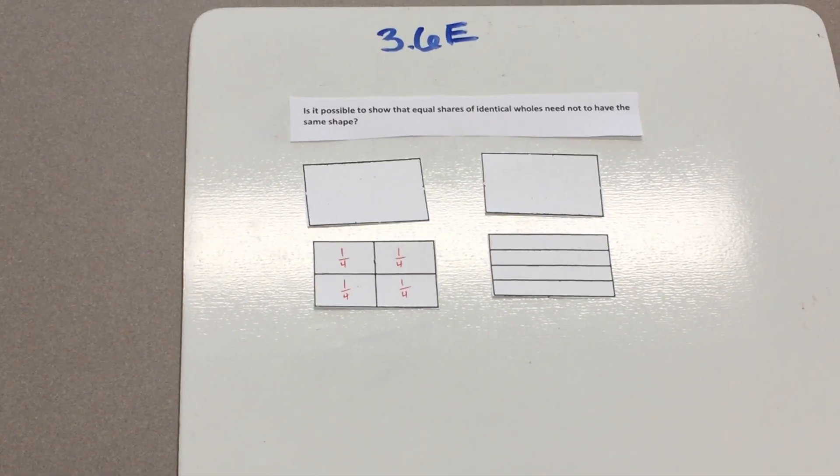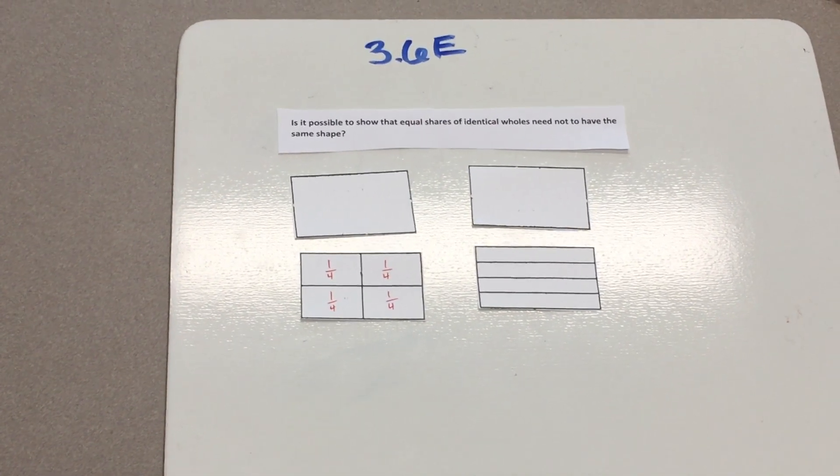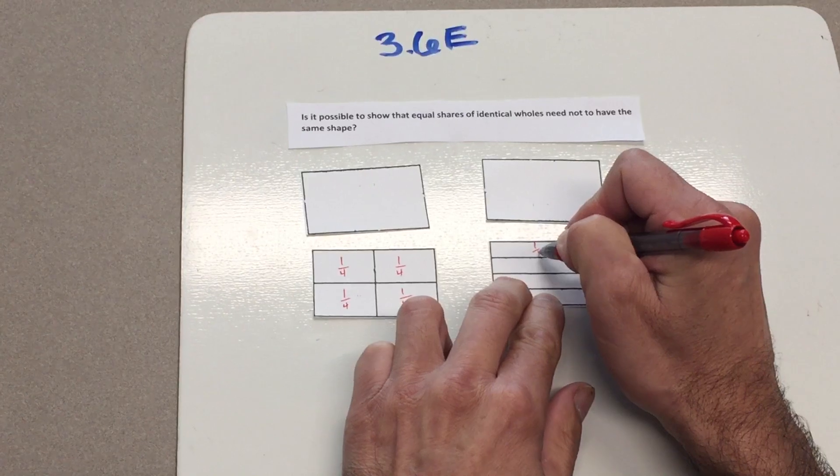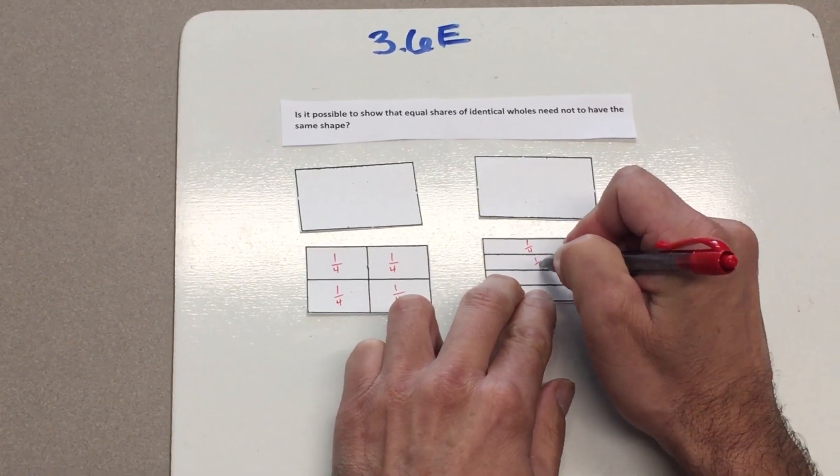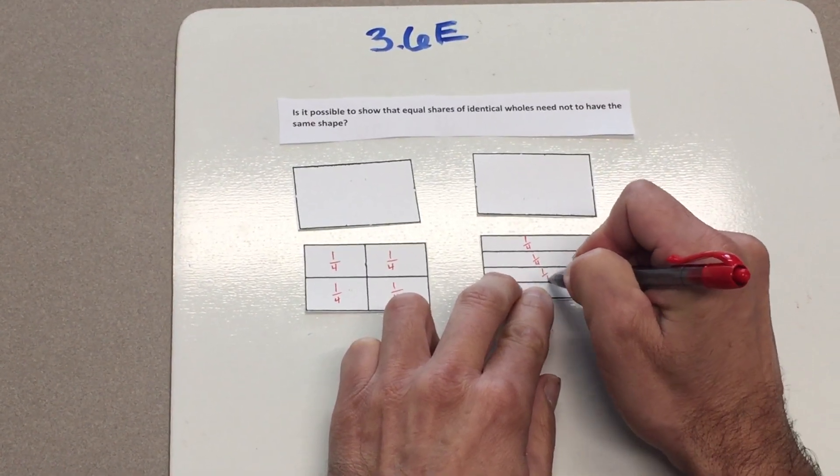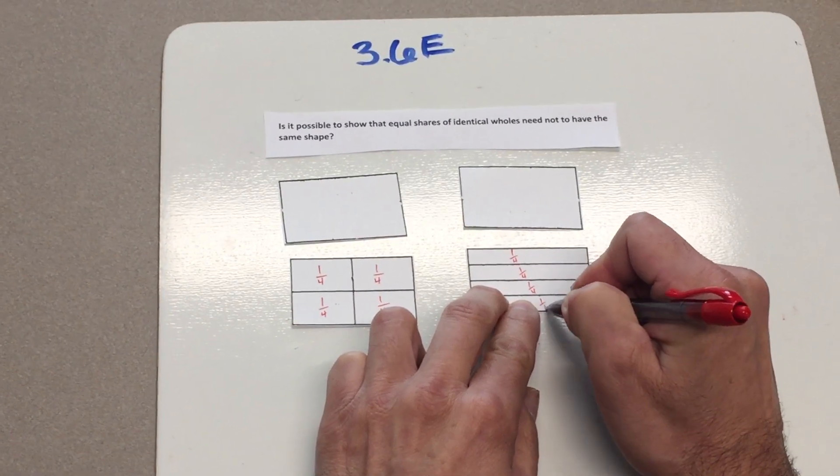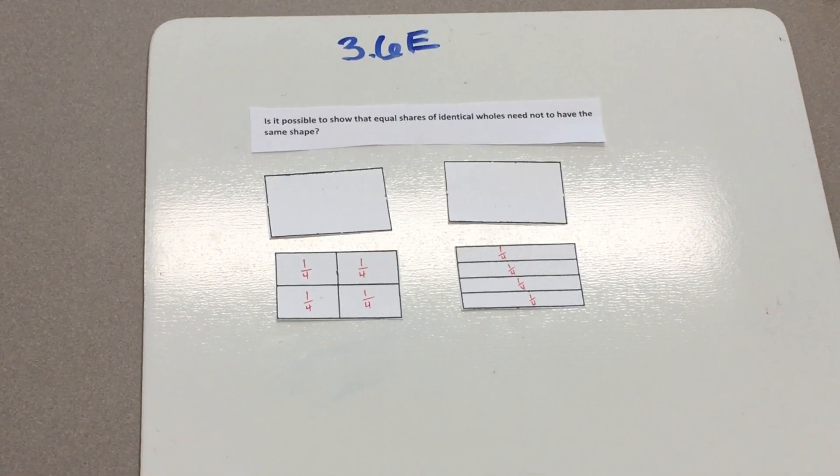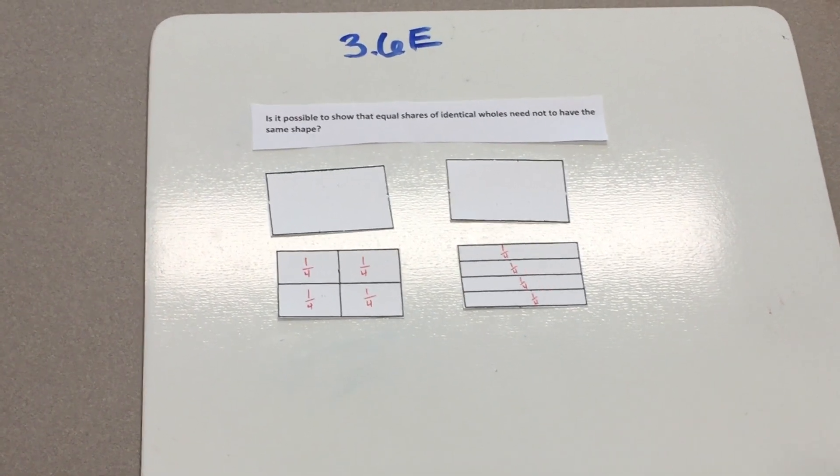I will now label each fractional piece with its unit fraction. The fractional name of each part is one-fourth. I am now going to shade one part or one-fourth of each whole.